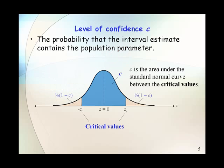So we need a little background. For a level of confidence C, we're talking about the probability that the interval estimate contains the population parameter. C is the area under the standard normal curve between the critical values.